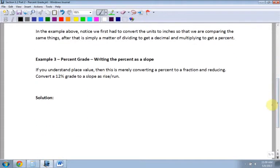The last example here, percent grade, writing the percent as a slope. So if we understand place value, then it's merely converting a percent to a fraction, and then reducing. So convert a 12 percent grade to a slope as rise over run. The first thing I want to do is I want to take my percent, and I want to convert it to a fraction. So let's do that first. And it's going to be similar to above, where I'm writing the percent as a fraction over what value? 12 over... Right. Percents are always written over 100. So now I have it written as a fraction.